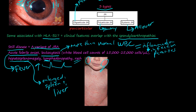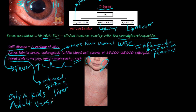Still's disease was usually thought to be only in children, but an adult version of Still's disease has been found. So Still's disease was first considered a variant of JRA, and now they've found an adult version too. Still's disease is kind of a subset of signs and symptoms characterized by JRA, but remember that there's an adult version as well.